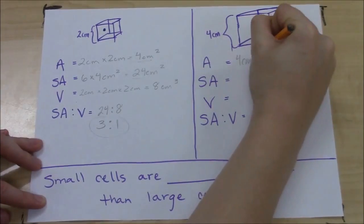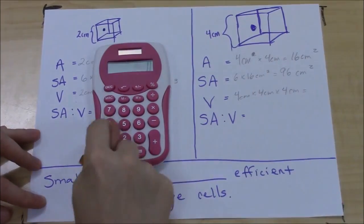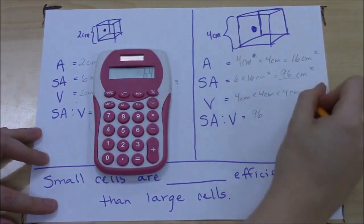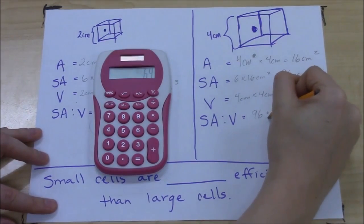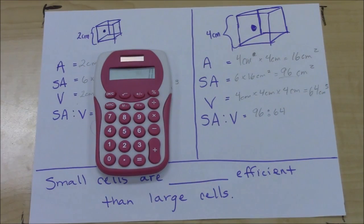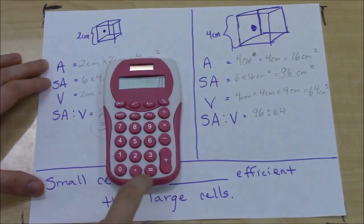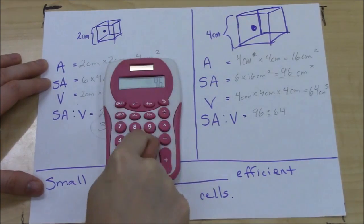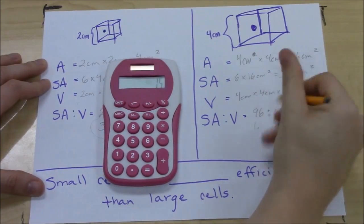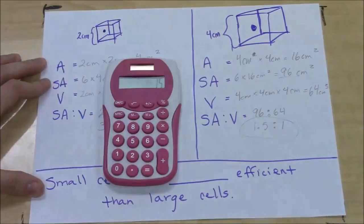Now let's try the four centimeter cube. The surface area is 96 and the volume is 64. We divide the surface area by the volume: 96 divided by 64 gives us 1.5. So 1.5 to 1 is the surface area to volume ratio of a cube with a side length of four centimeters.